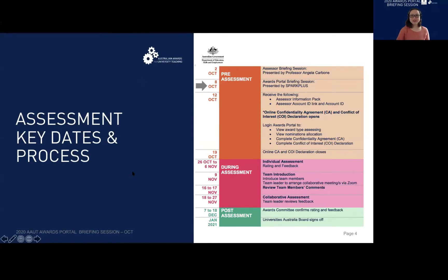Some of the key dates: on Monday the 12th of October you will receive the assessors information pack, which includes the assessors guideline and assessment instructions on how to use the portal, together with an account ID link and account ID to log into the system. Also on the 12th of October the awards portal for the confidentiality agreement and conflict of interest declaration opens, and it closes on the 19th of October. Please note this is a prerequisite for all assessors in order to assess the nominations.